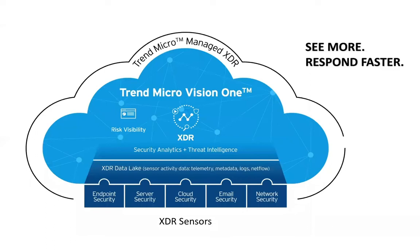With Trend Micro Vision One, our goal is to make the security team's lives easier by providing tools that not only speed up the detection and investigation process, but also help on the management side, such as provisioning the agent and adjusting product policies to continually optimize defenses.